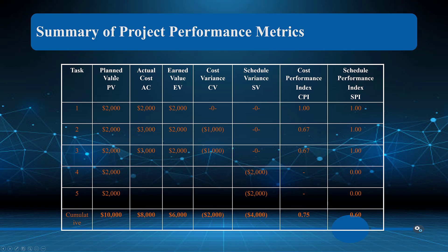Here is the summary of the metrics we've discussed. The planned value for each task is two thousand. For the first task, the actual cost is two thousand and the earned value is two thousand, so there's no cost variance and no schedule variance — the CPI and SPI are both one, meaning we were good with both cost and schedule.